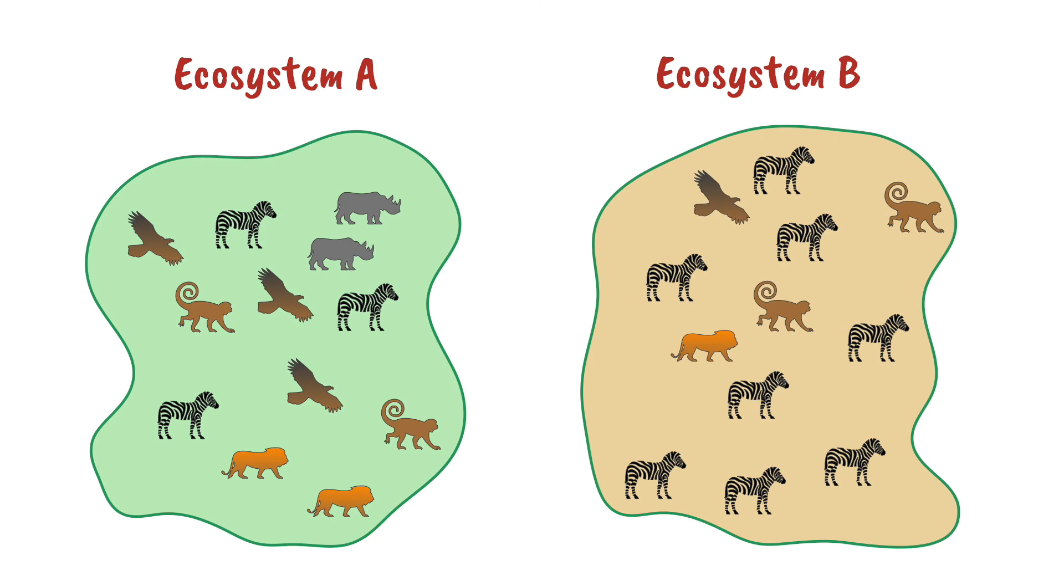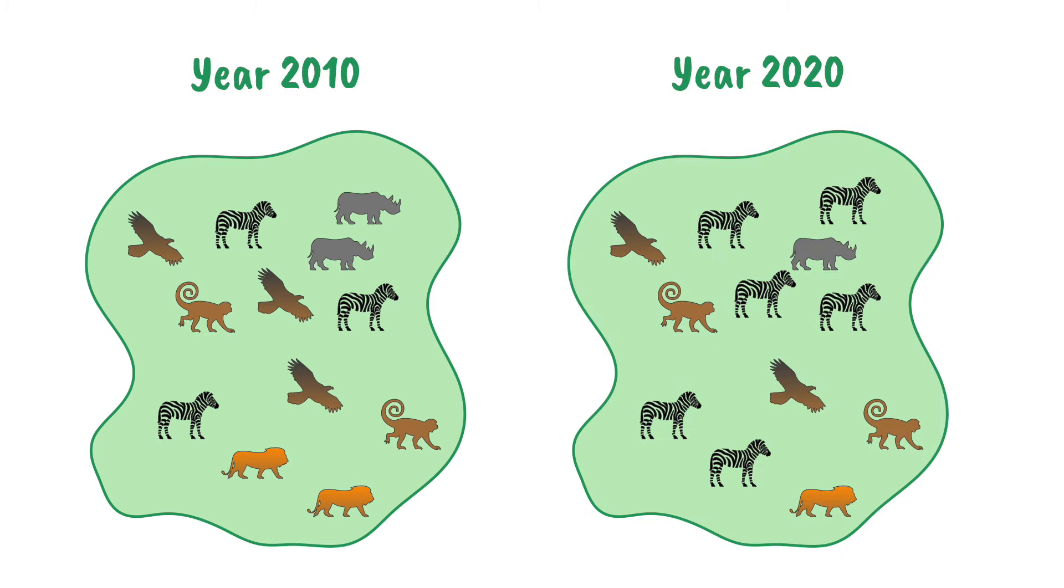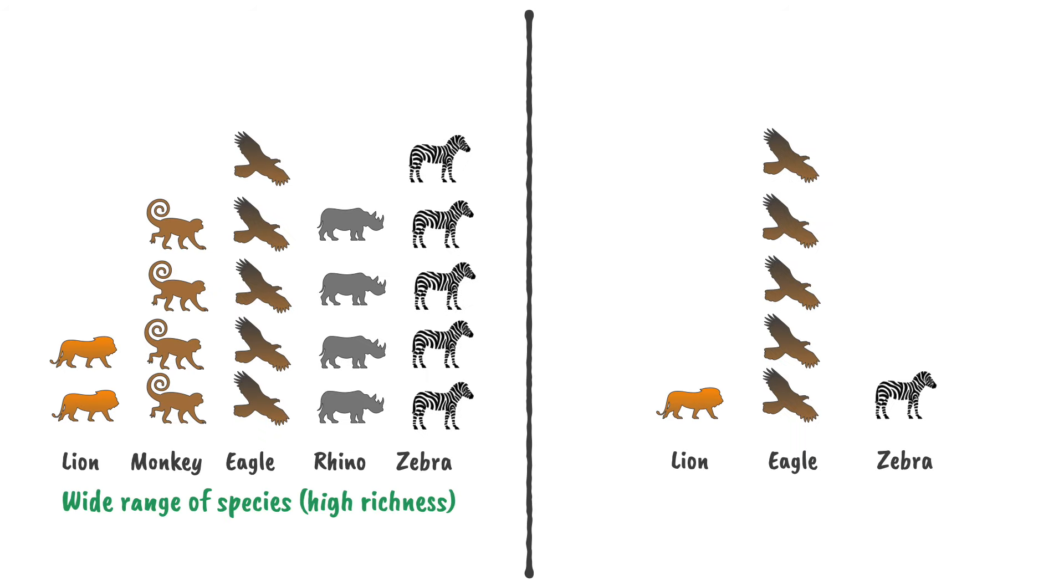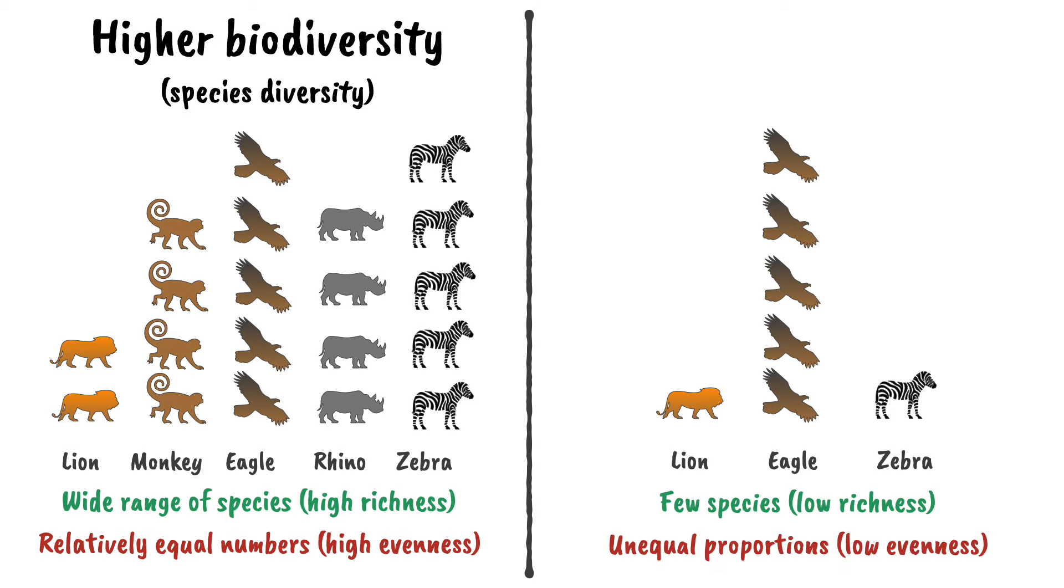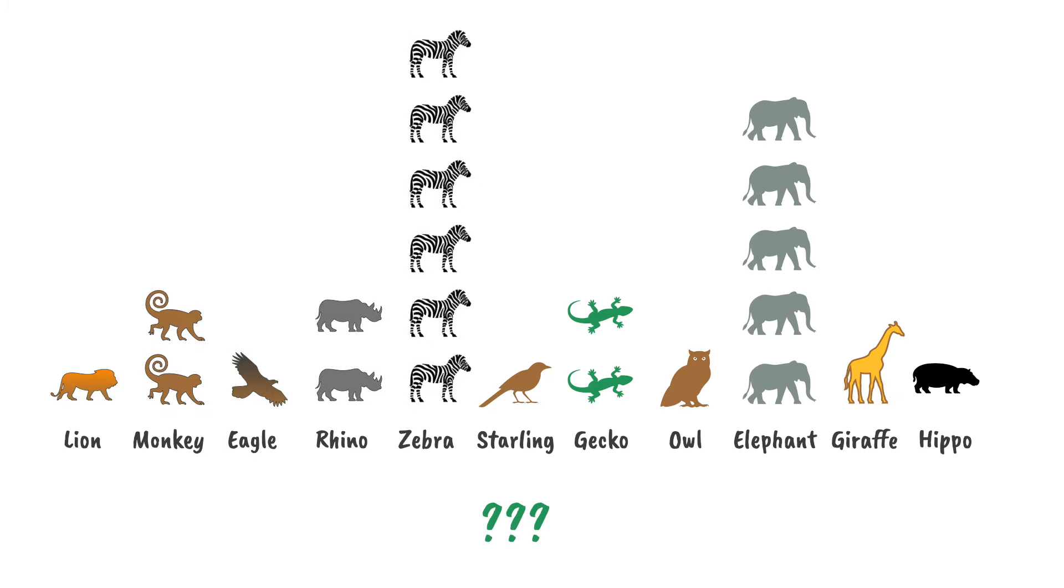It's sometimes useful to compare the biodiversity in two ecosystems, or the changing biodiversity over time in a single ecosystem. And sometimes it's obvious. A place that has a wide range of species in relatively equal numbers has a higher biodiversity than a place with few species in unequal proportions. But sometimes it's not so obvious. What if there are lots of species, but there's low evenness? How high is the biodiversity in this ecosystem?